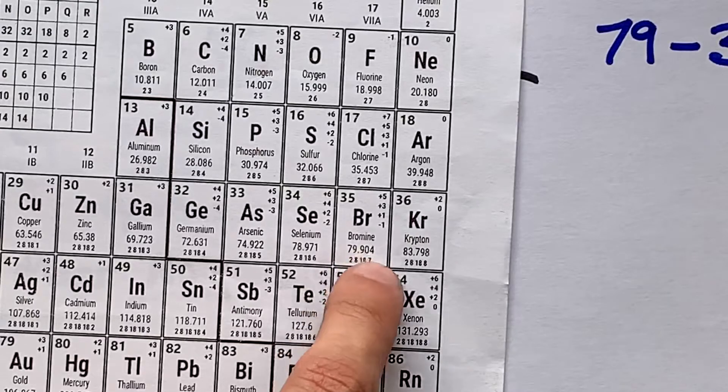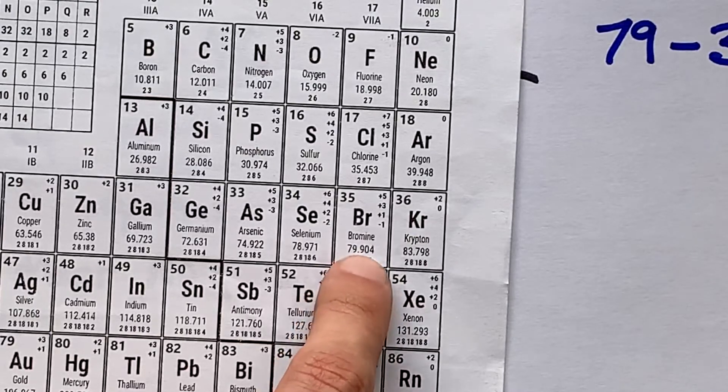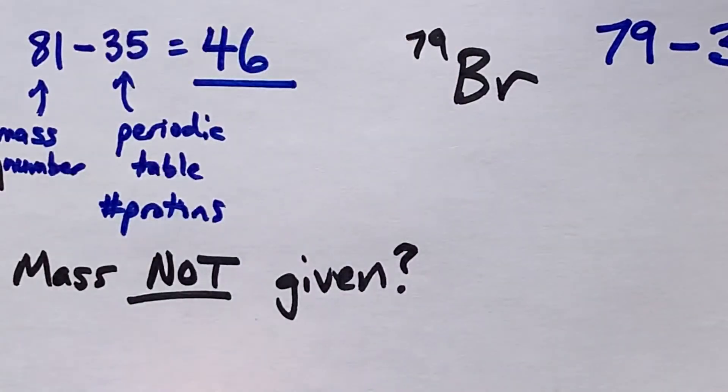You're supposed to round it to the nearest whole number. 79.9 becomes 80 in my world.